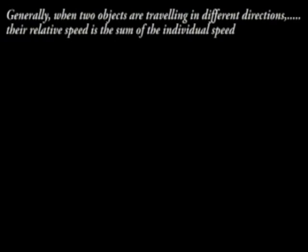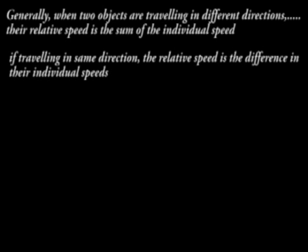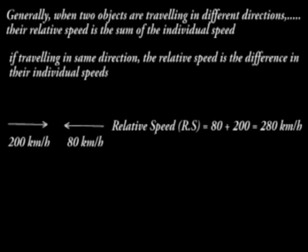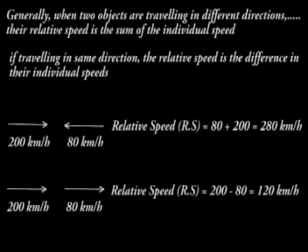Generally, when two objects are travelling in different directions, that is towards each other, their relative speed is the sum of individual speed. If travelling in the same direction, the relative speed is the difference in their individual speeds. This is illustrated below.